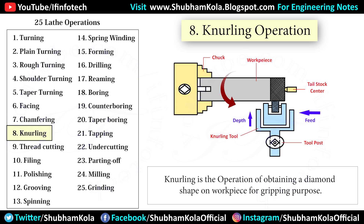Knurling is the operation of obtaining a diamond shape on a workpiece for gripping purposes. This is done to provide a better gripping surface when operated by hand, using a knurling tool. The tool consists of a set of hardened steel rollers held rigidly on the tool post. Knurling is done at the lowest speed available on the lathe, and the speed varies from 1 to 2 mm per revolution. Two or three cuts may be necessary to give a full impression.